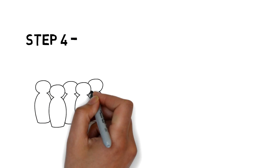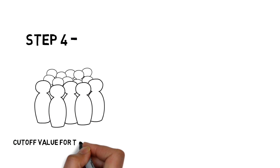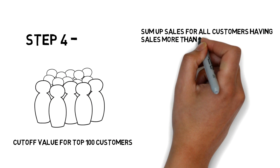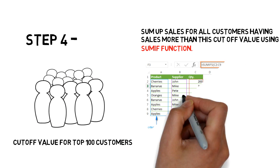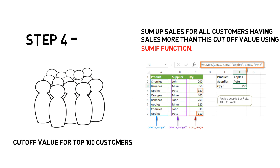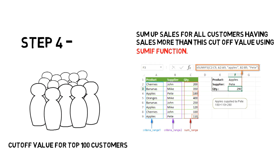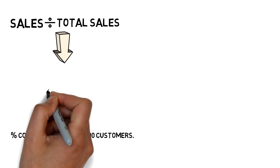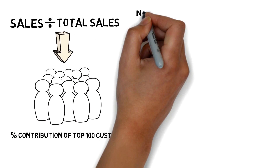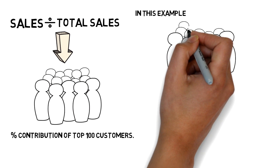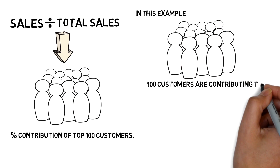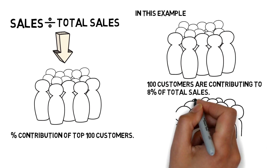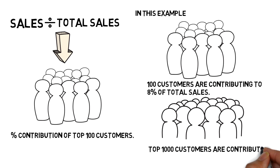Step 4: Since we find the cutoff value for top 100 customers, we will sum up sales for all customers having sales more than this cutoff value using the SUMIF function. The sale divided by total sales will give you the percentage contribution of top 100 customers. For example, 100 customers are contributing 8% of total sales, and top 1000 customers are contributing 46% of total sales.